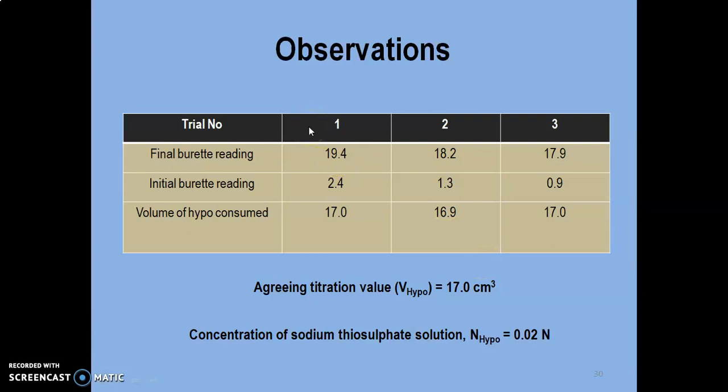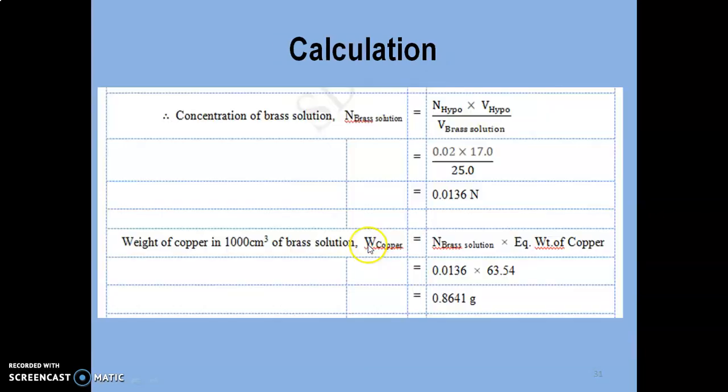After that, the final burette reading has to be noted down and three successive trials have to be carried out. Our mean titration value is noted as 17 cm3. Concentration of sodium thiosulfate which was taken in the burette was 0.02 normal.